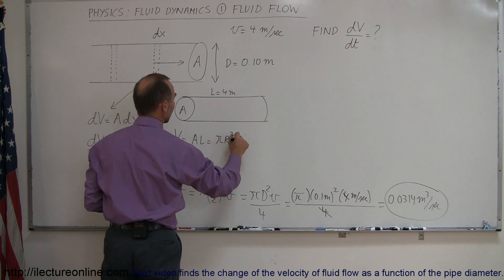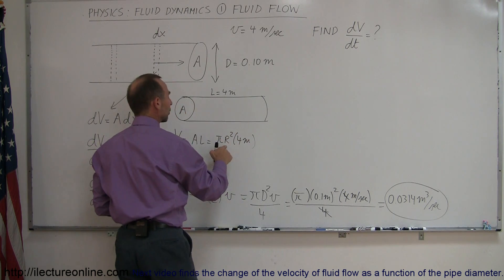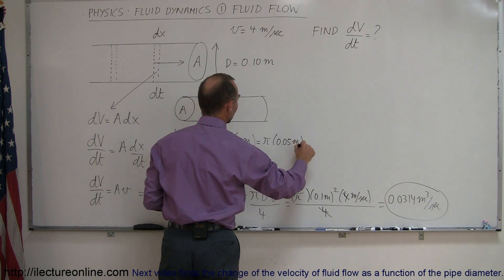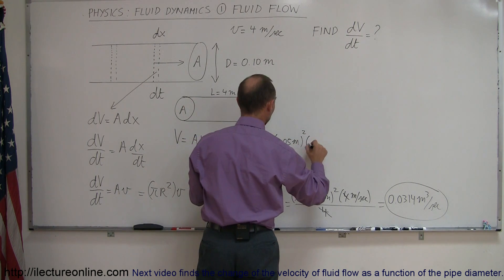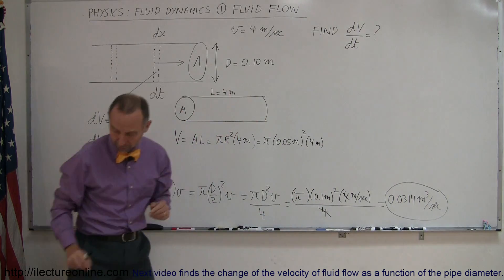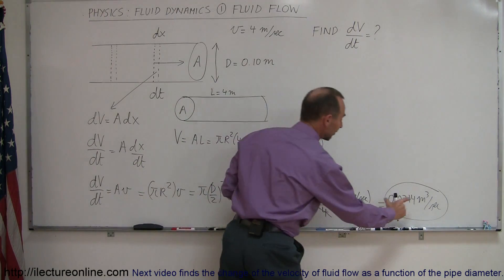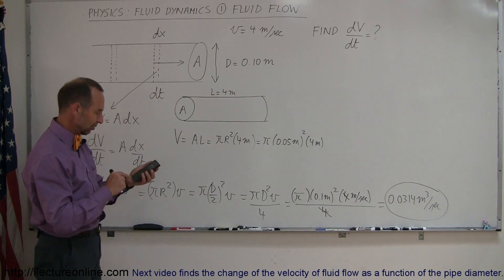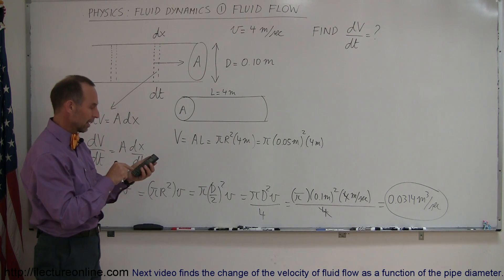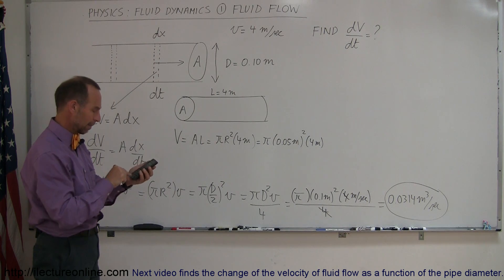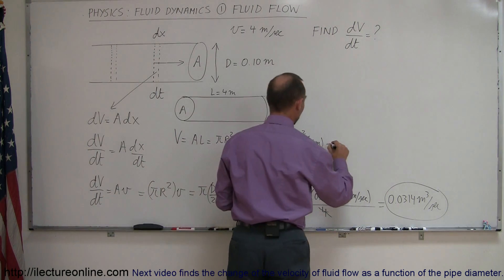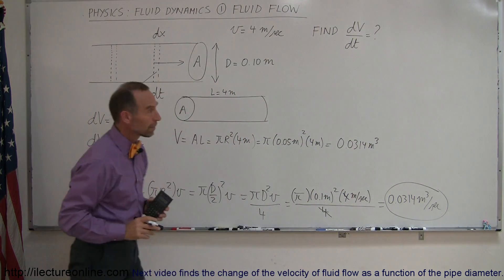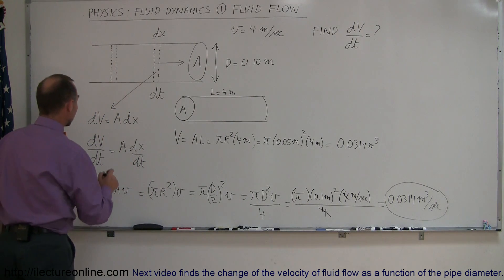The volume equals the area times the length — π·r² times 4 meters. The radius is half the diameter, so r = 0.05 meters. That gives π·(0.05)²·4, which equals 0.0314 cubic meters — the same result, confirming our flow rate calculation.